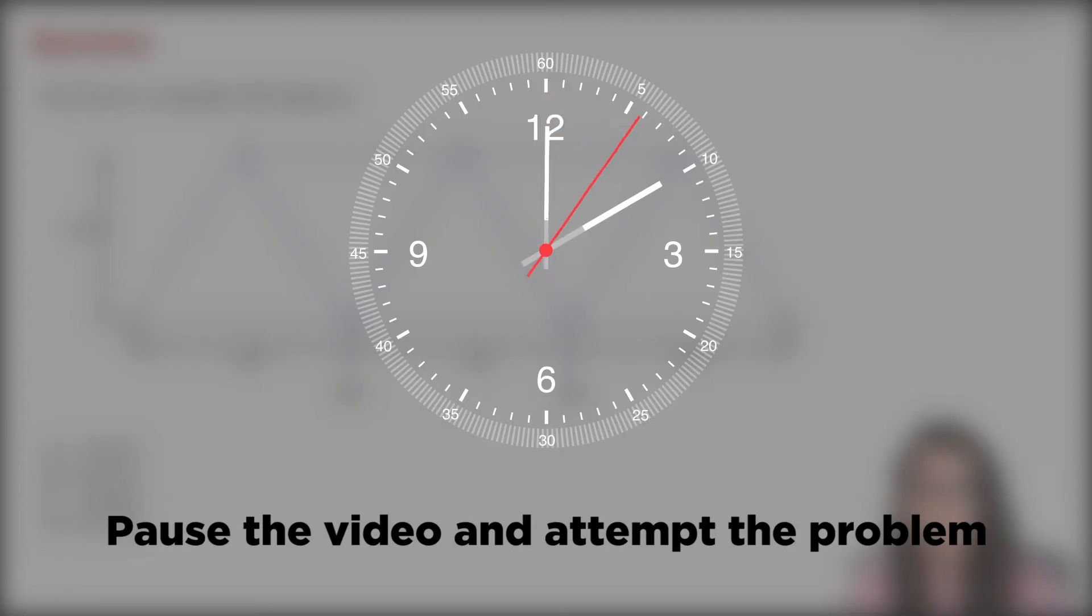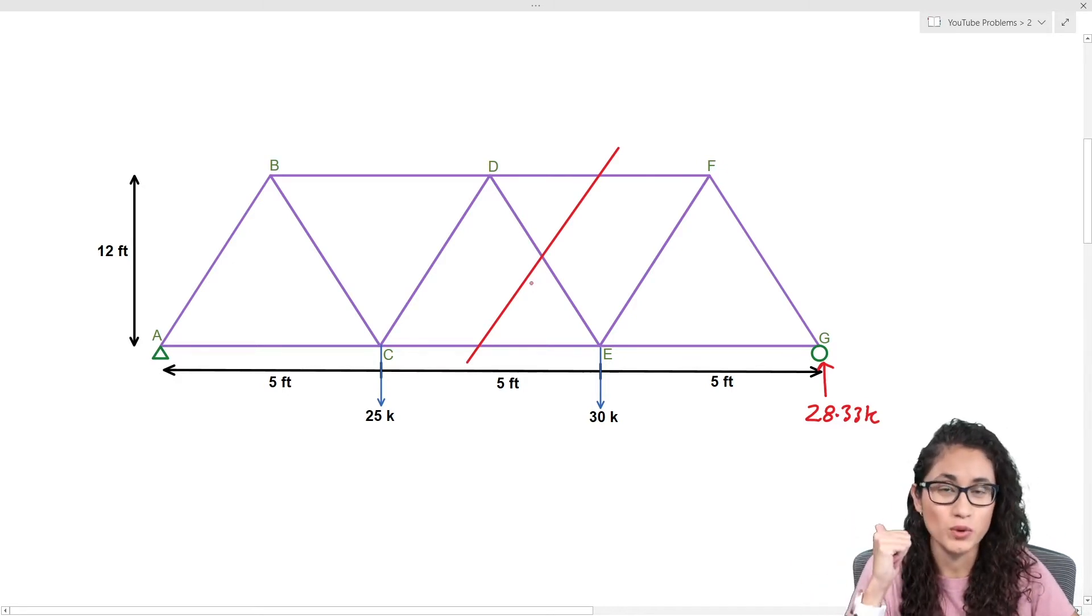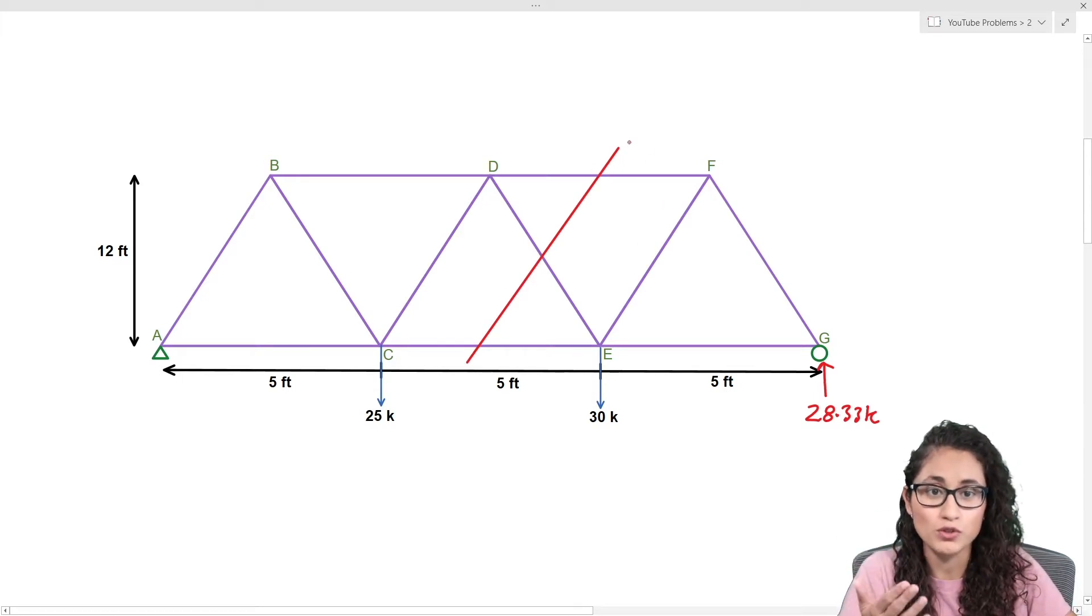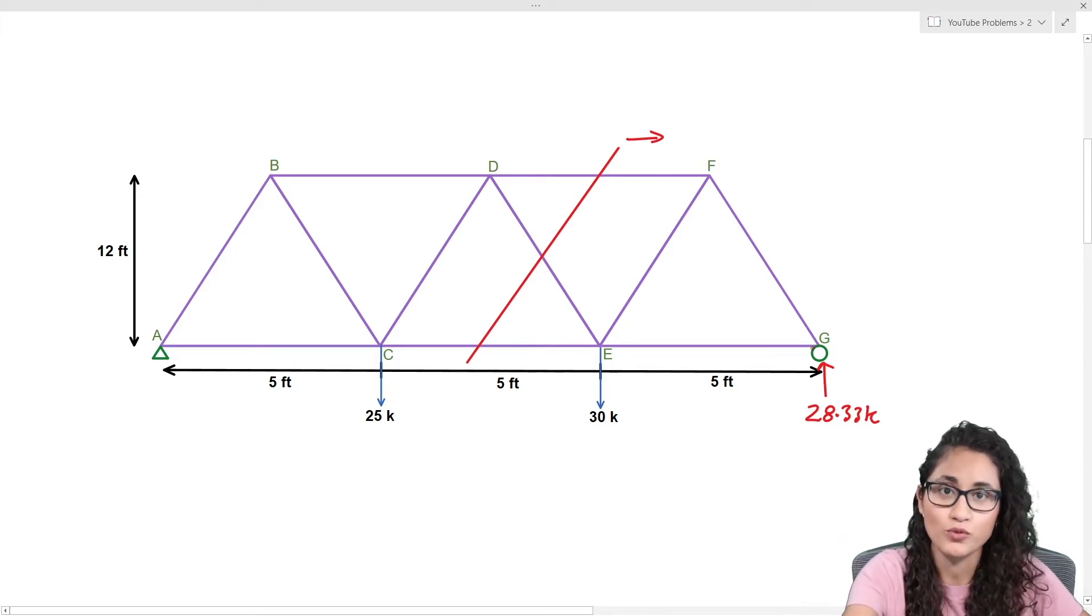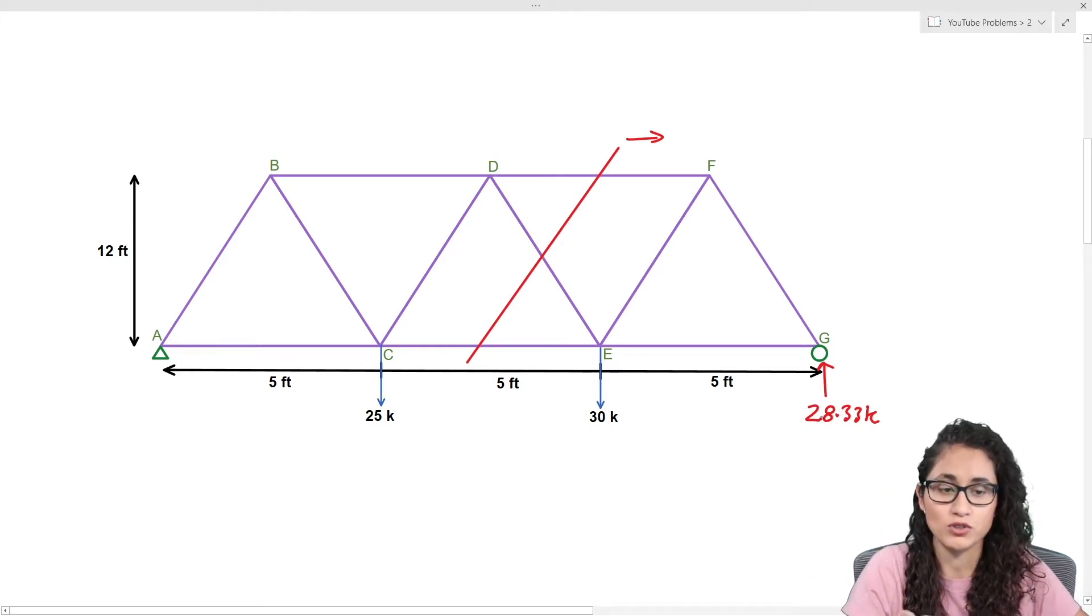What we're going to do here is cut through here because we're trying to solve for DE. The next step is you gotta pick which side you want to work with. We covered that in the previous video. What we're going to do here is pick this side. Once you decide, then you have to find the reaction force which is 28.33 kips. Again, we covered this in the previous video, so if you haven't checked that video make sure that you check it out.